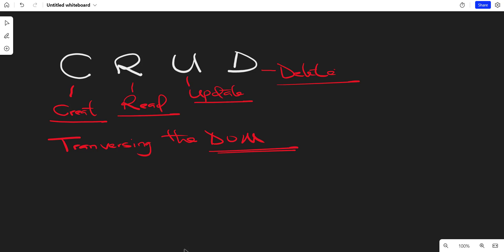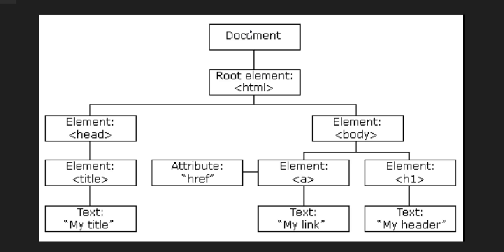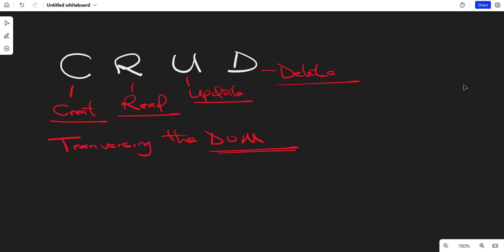The DOM is in a tree shape, called the DOM tree. We have the document, and the root element is the HTML. The HTML has two children: the head and the body. The head contains things like the link to your stylesheet, meta tags for device compatibility, and the title. The body contains most of our elements like divs, h1, p tags, and so forth.